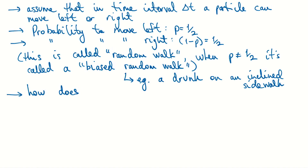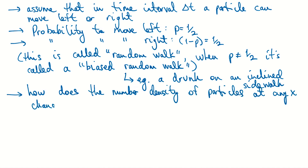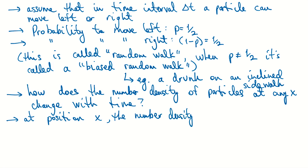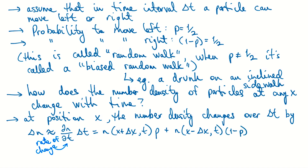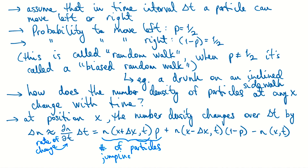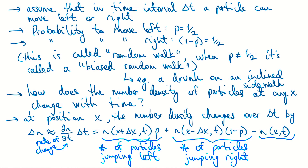We ask: how does the number density of particles at position x change with time? The change in number density Δn over time Δt equals the rate of change times the time step. This is comprised of particles jumping left from our neighbor to the right, plus particles jumping right from our neighbor to the left — everybody coming into our x position — minus all the particles that exit by jumping left or right from x.